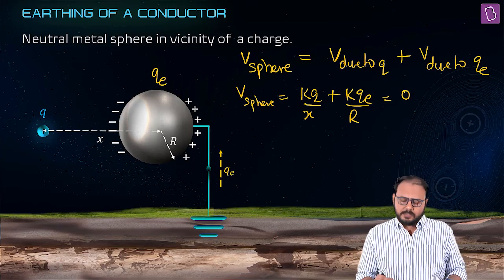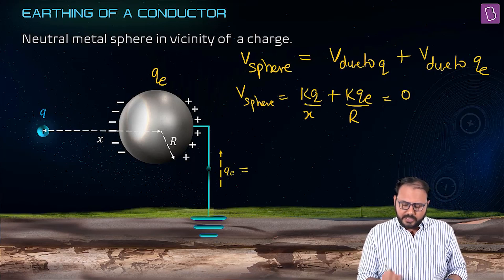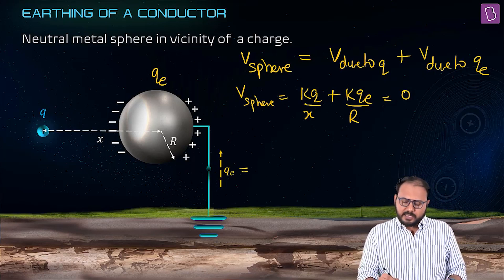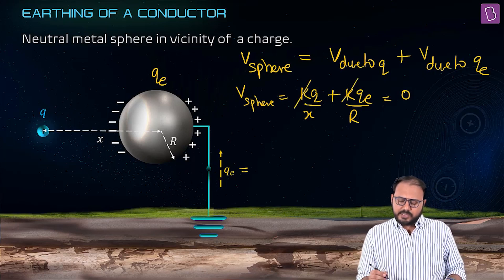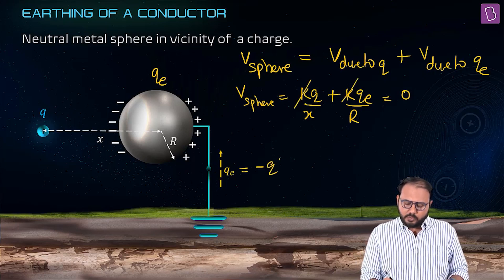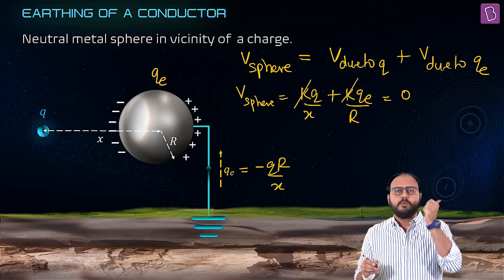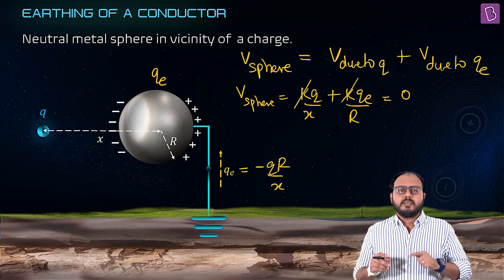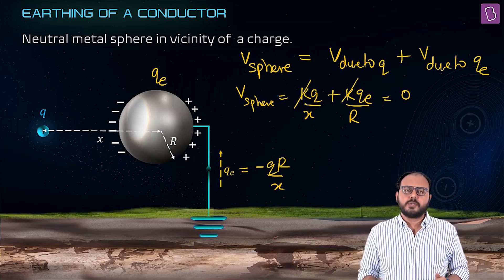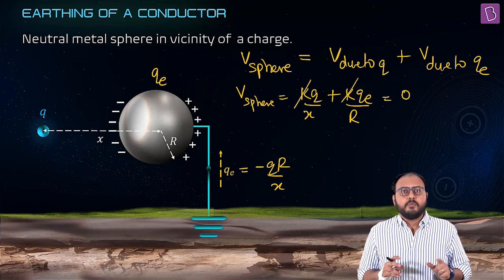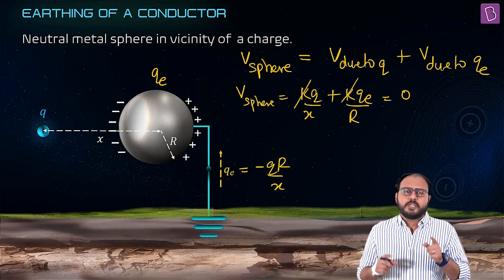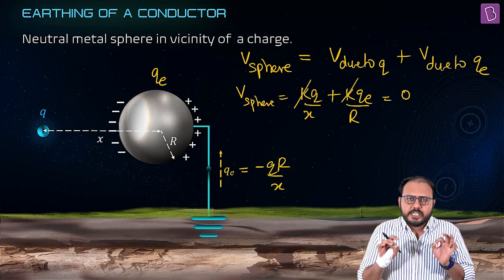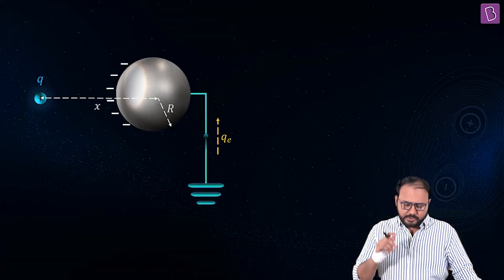Brilliant! So k and k cancel, your qe comes out to be equal to - if I cancel k and k, my qe is coming out to be minus Q r by x. There you go. Earth has given some charge to the sphere. Why? In order to make the total potential zero. And here is your answer.